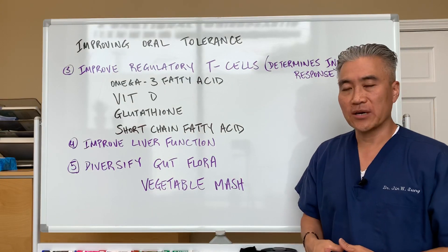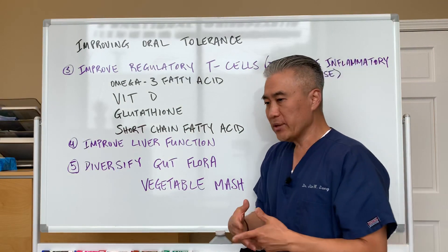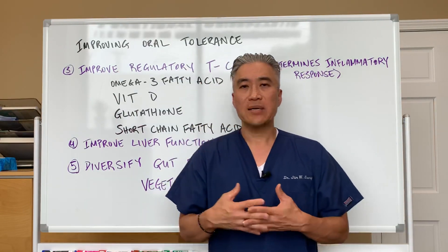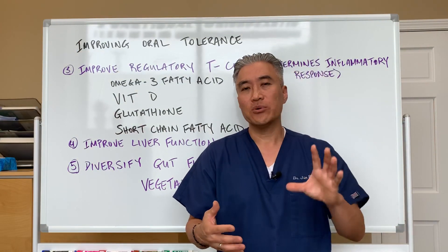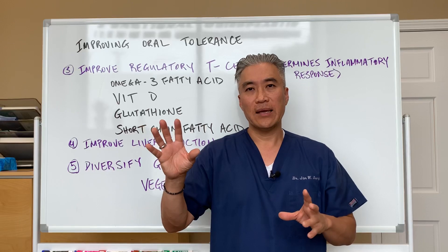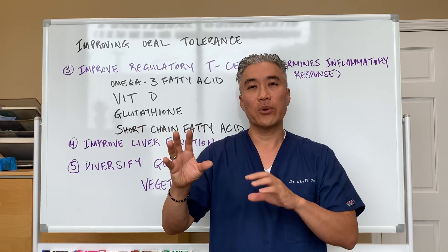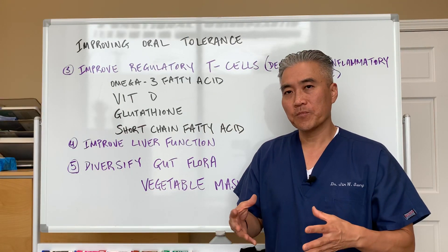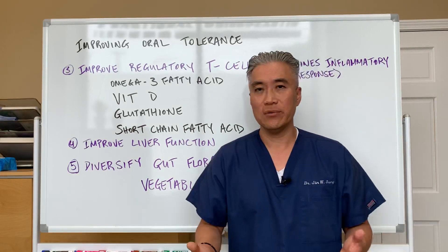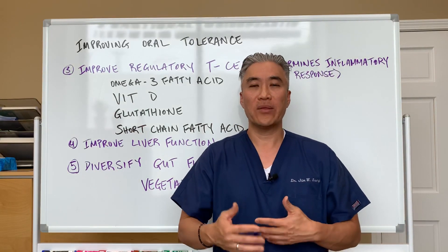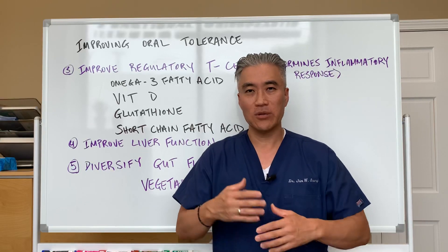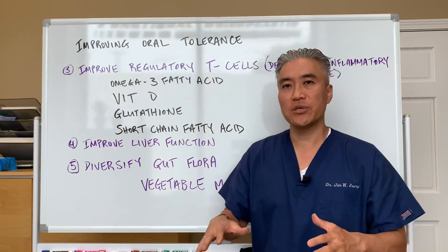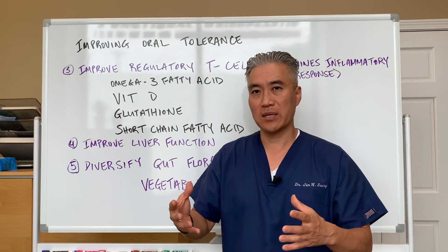We also have to improve liver function. When the dendritic cells sample these proteins, they travel to the liver and activate what we call the Kupffer cells of the liver, which can cause an inflammatory response. So we want the liver functioning at a high level — making sure all the methylation, glucuronidation, sulfation, and other detox processes are working properly to reduce the immune response due to dendritic cells.